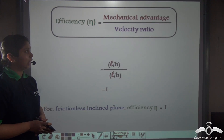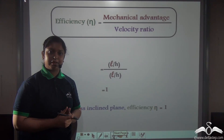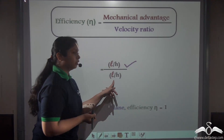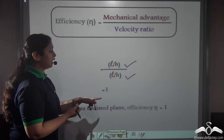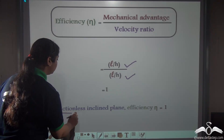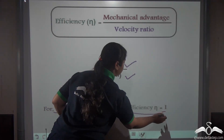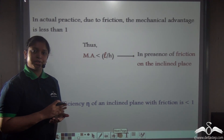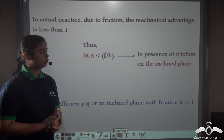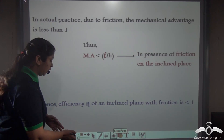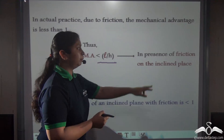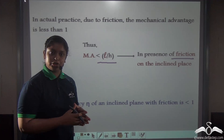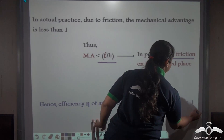The efficiency of the inclined plane can be written as mechanical advantage divided by velocity ratio. Mechanical advantage was L/H and velocity ratio was also L/H, so efficiency equals 1. Hence in a frictionless inclined plane, efficiency η equals 1. However, it's not always the case that we have a frictionless inclined plane. Usually the force of friction reduces the mechanical advantage, making it less than L/H. Therefore, with friction present, the efficiency of an inclined plane is always less than 1.